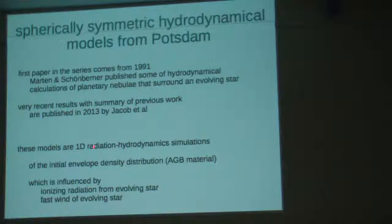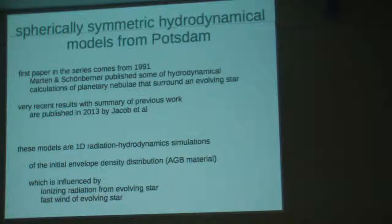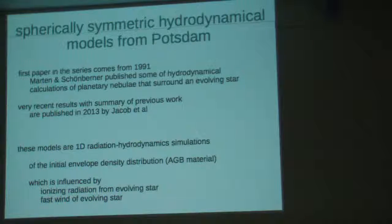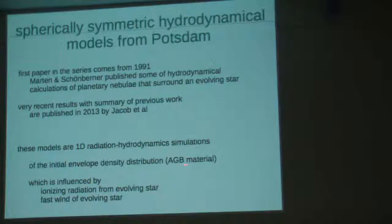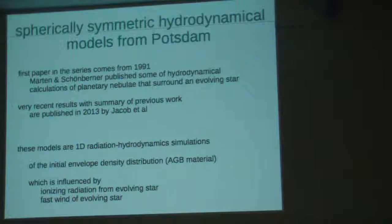The initial condition of this model is the initial internal density of these regions — the actual material expelled by the star at the start of the creation effects. This is the initial condition for this hydrodynamic model. There is no continuous evolution between the start of the zero-age main sequence until the planetary nebula phase. At one moment, this hydrodynamic computation starts in an envelope. This envelope is under the influence of ionizing radiation from the central star, which heats it up, and the blowing wind from this evolving star.